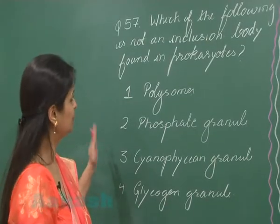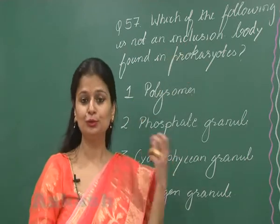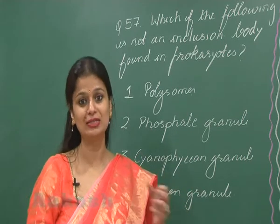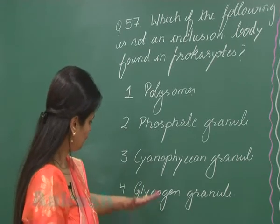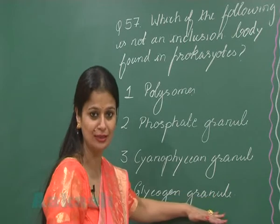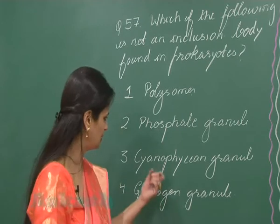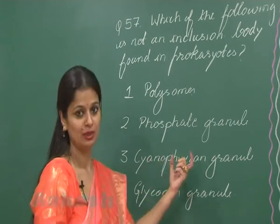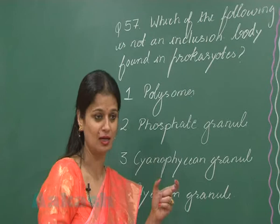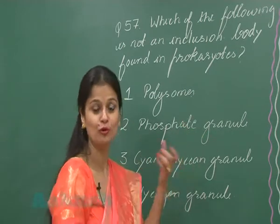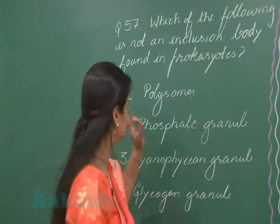Question number 57: which of the following is not an inclusion body? Inclusion bodies are non-living structures present in the cytoplasm of prokaryotes. Option 4 — glycogen granules — is an inclusion body involved in carbohydrate storage. Cyanophysian granules are present in BGA and store cyanophysian starch. Phosphate granules, also known as volutin granules — these three are all inclusion bodies.